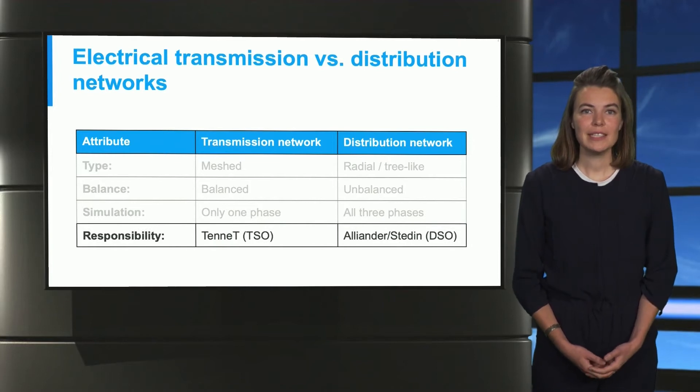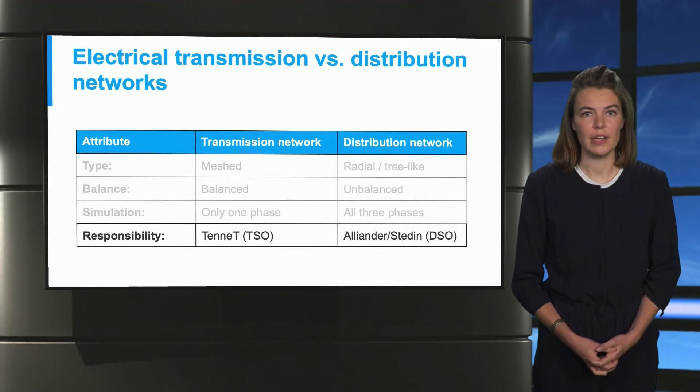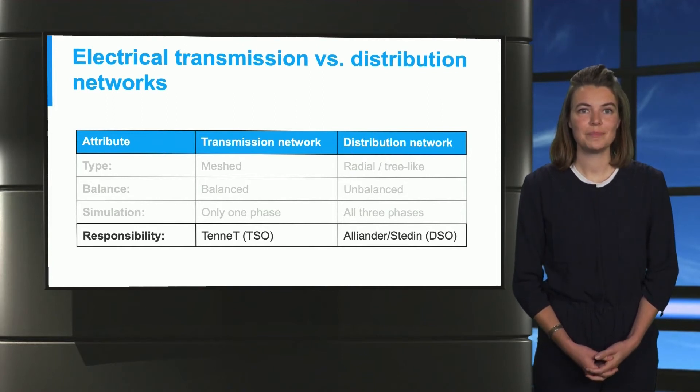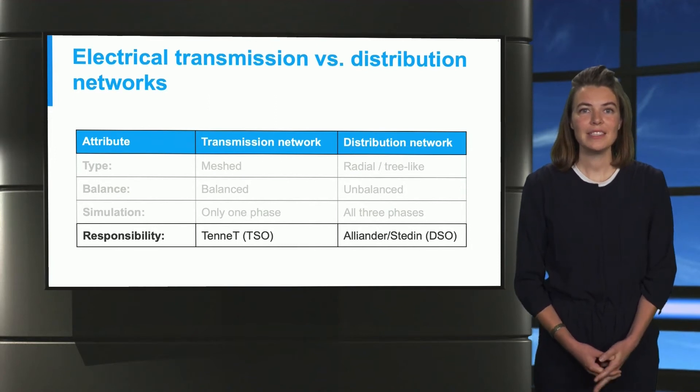The responsibility of these two separate networks lies with two different utilities. In the Netherlands, the transmission network is handled by only one transmission system operator, a TSO utility called Tenet. In contrast, the distribution network is the responsibility of different parties like Aliander or Statin, also known as distribution system operators or DSOs for short. It is to be noted that the TSO and DSOs operate separately. This can lead to problems such as limited information sharing due to privacy issues. Hence, it is not easy to simulate both networks in a coupled manner.